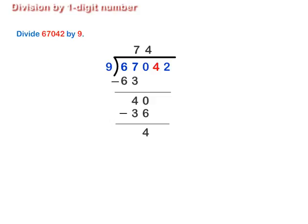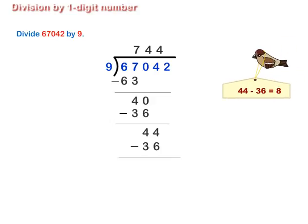Step 3. Again, bring down the next digit, that is, 4. The number now formed is 44. As 4 multiplied by 9 is equal to 36, so 9 divides 44 four times. Write 4 next to 74 at the top and 36 below 44 and subtract. 44 minus 36 is equal to 8.